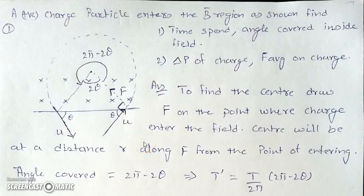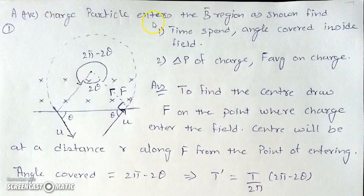In this video, there will be some questions based on the motion of a charged particle in a uniform magnetic field. You must have watched the video in which I explained the basics of this topic. So, there is a positive charged particle entering a magnetic field region above a horizontal line, and you have to find the time spent by the charged particle and the angle covered inside the field.